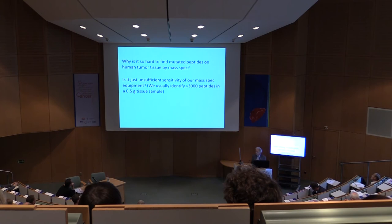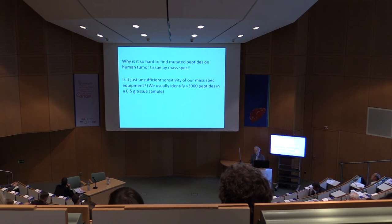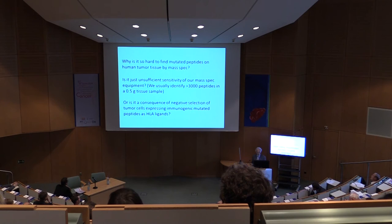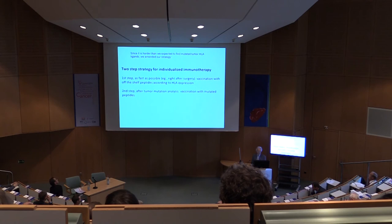Why is it so hard to find mutated peptides on human tumor tissue directly from the patient by mass spec? There are probably two reasons. One is simply insufficient sensitivity in our mass spectrometry — we find 3,000 to 5,000 peptides per tumor sample in a small sample. The second reason may be negative selection of tumor cells expressing immunogenic mutated peptides as HLA ligands. We have presently started a research program funded by the ERC to analyze this question.